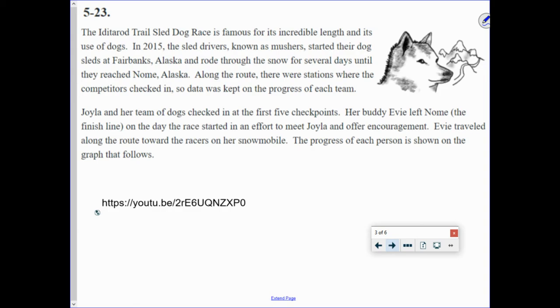So here's our problem, 5-23. Now, hopefully you watched the other video. Really watch the other video if you haven't, because it really explains the Iditarod trail sled dog race. Otherwise, you're going to be like, what on earth is he talking about? But it's famous for its incredible length and its use of dogs. In 2015, the sled drivers known as mushers started their dog sleds at Fairbanks, Alaska, and rode through the snow for several days until they reached Nome, Alaska.